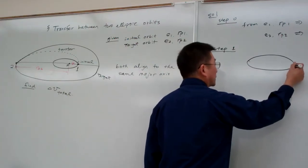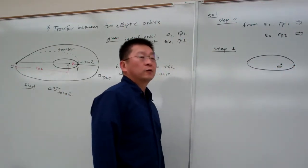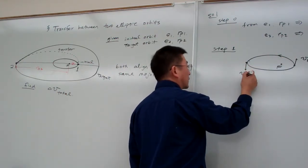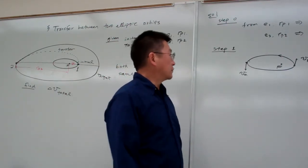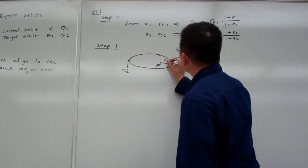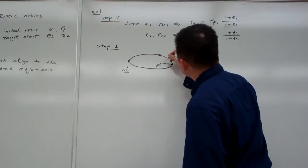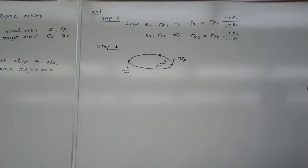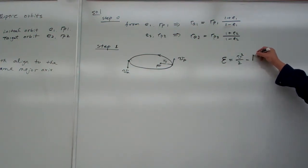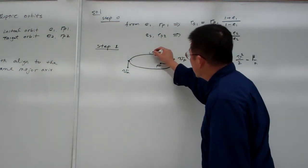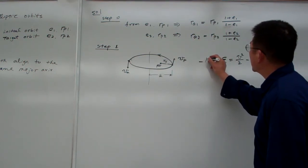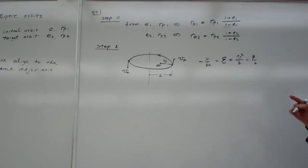Let me consider a generic elliptic orbit. This is our focus. I want to determine the velocity at perigee and velocity at apogee. We simply rewrite. Starting from the vis-viva equation: V squared over 2 minus mu over R equals minus mu over 2A, where A is the semi-major axis. So we have to know A first. A equals one-half of RP plus RA. That is why we calculate those distances.